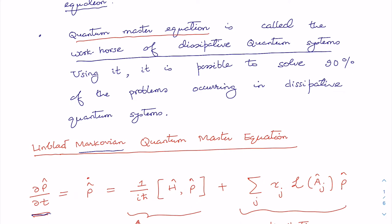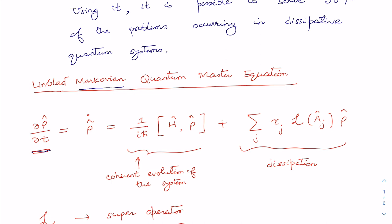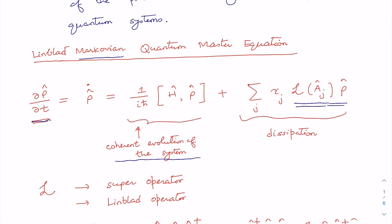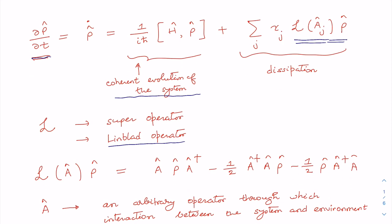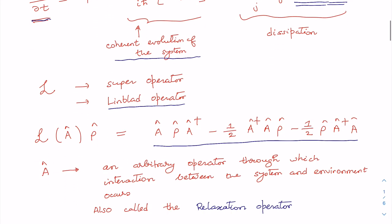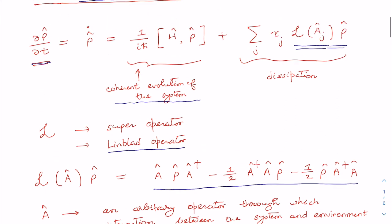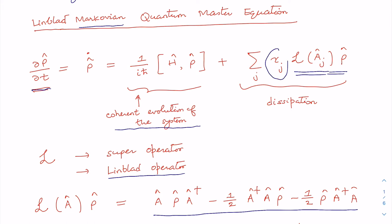The Lindblad Markovian quantum master equation has two parts: one part takes into account the coherent evolution of the system, and another part refers to dissipation. Here L is an operator — known as the super operator or Lindblad operator — because it operates on another operator, the density operator. This operation has a particular structure where operator A is an arbitrary operator through whose interaction between the system and the environment takes place.